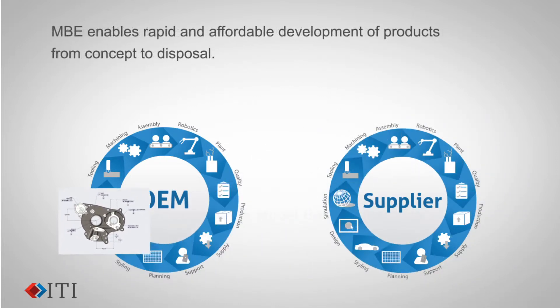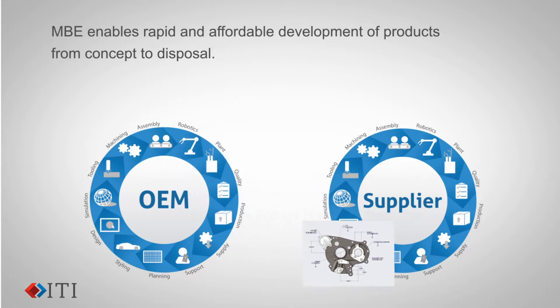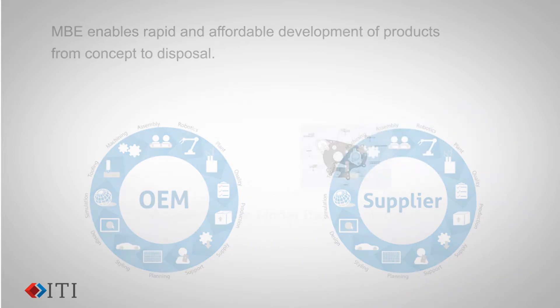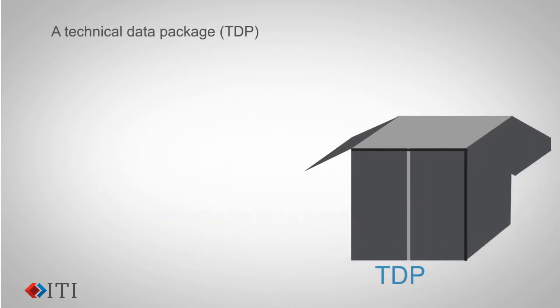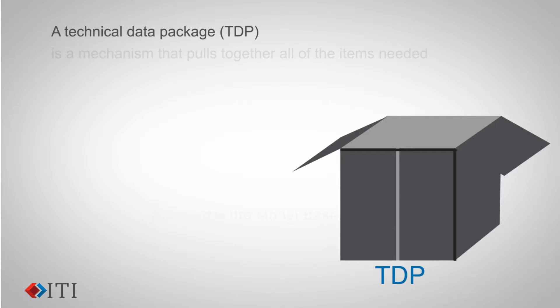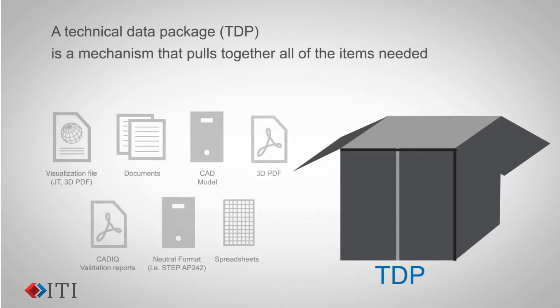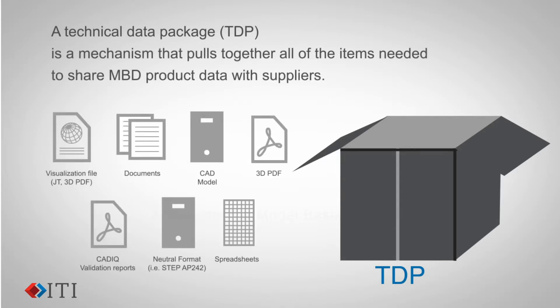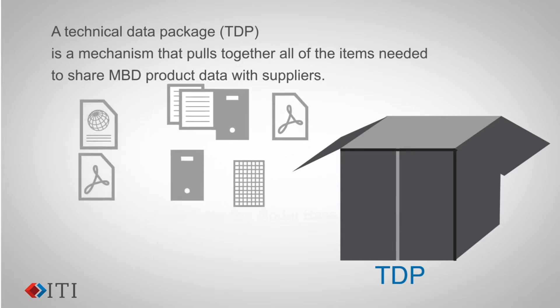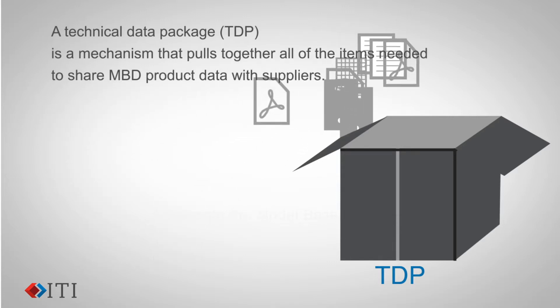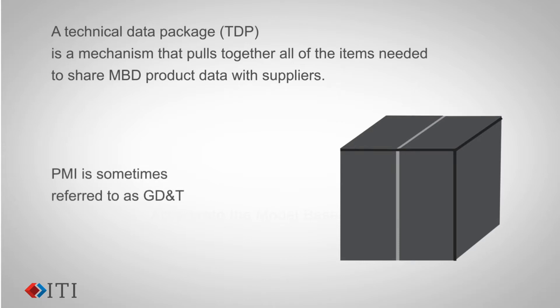MBE enables rapid and affordable development of products from concept to disposal. A Technical Data Package, or TDP, is a mechanism that pulls together all the items needed to share MBD product data with suppliers. TDPs typically include a native CAD file, a neutral CAD file, and a visualization file — all of which include Product Manufacturing Information, or PMI.